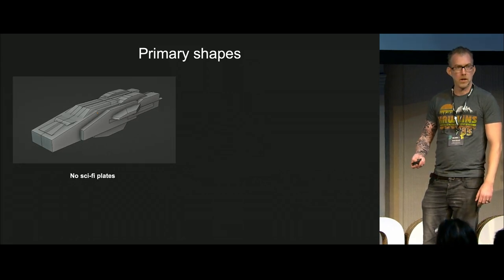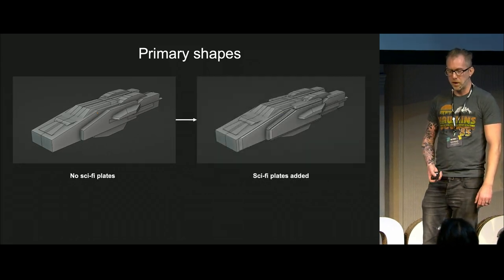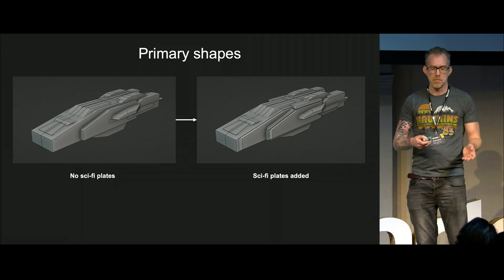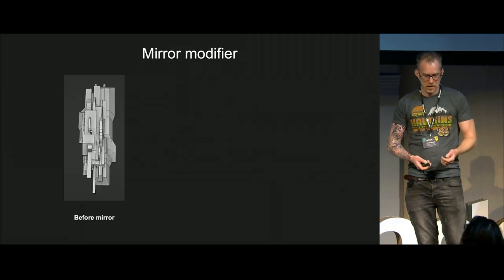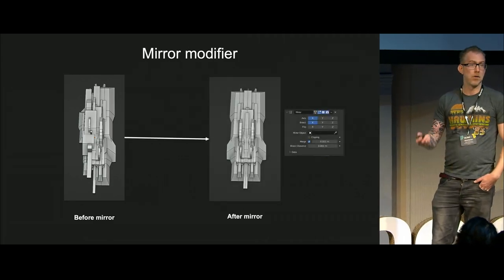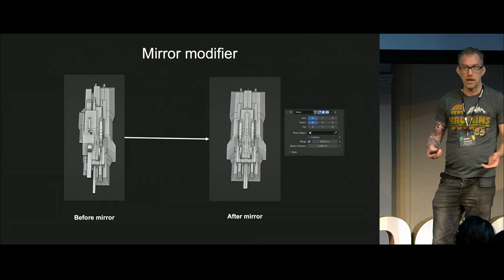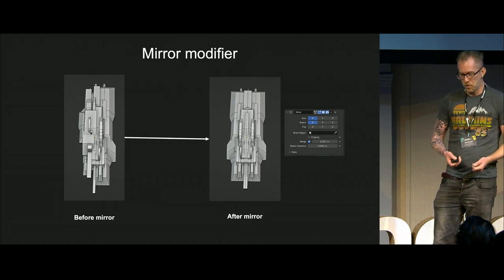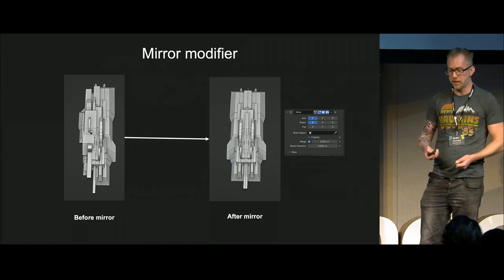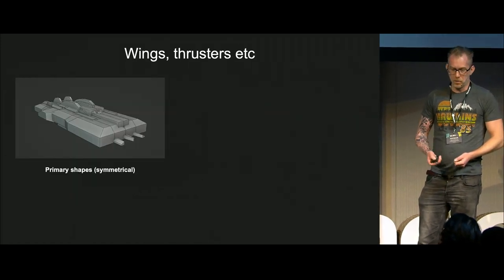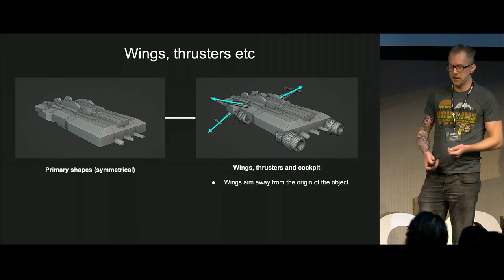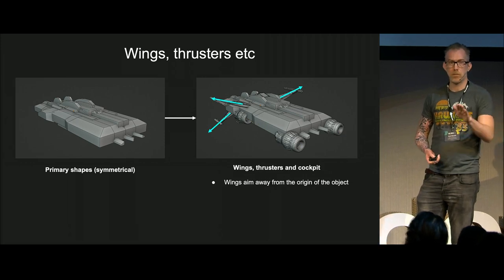No sci-fi plates — and then magically we have sci-fi plates. This is basically just filtering out random faces, duplicating them, and extruding them. In order to make them all symmetric, I just apply a normal mirror modifier, because that's the fastest way. In geometry nodes you would have some kind of Boolean operation, but we don't still have a bisect there. Then I add wings, thrusters, etc. The thrusters always point toward the back, and wings point away from the origin of the object.